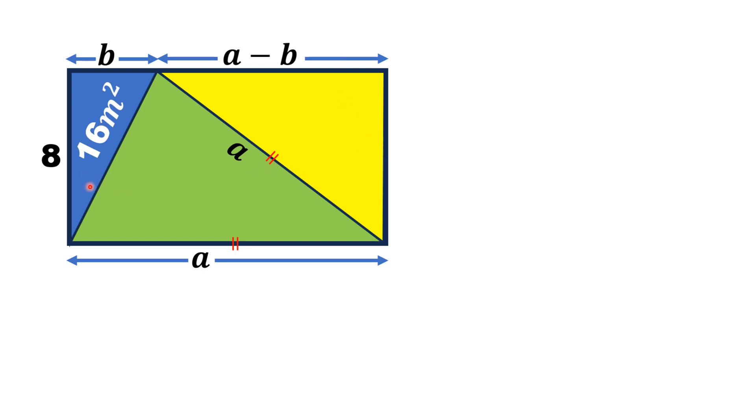Now, we know that the area of a triangle is equal to half times its base times height. If we consider the blue triangle, its base is B, height is 8, and its area is 16 meters square.